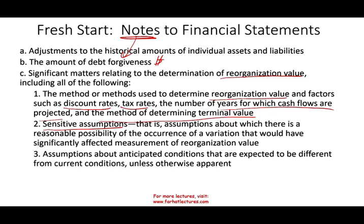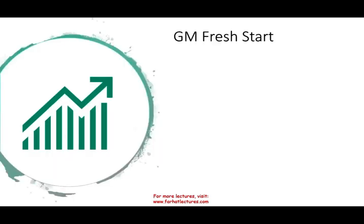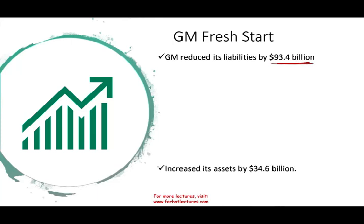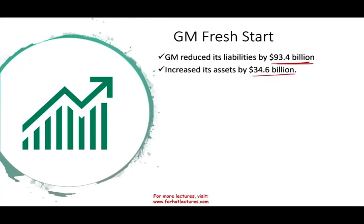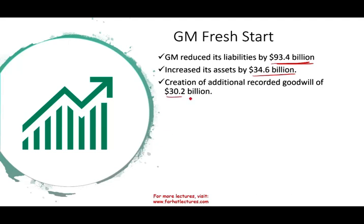The financial statements start with zero retained earnings, with assets and liabilities reported at fair value. A case in point is GM. GM went through Chapter 11 and got out of it with a fresh start. After emerging from Chapter 11, they reduced their liabilities by $93 billion, increased their assets by $34.6 billion, and what was unusual was the creation of goodwill of $30.2 billion. Most of this goodwill was the result of accounting rules.